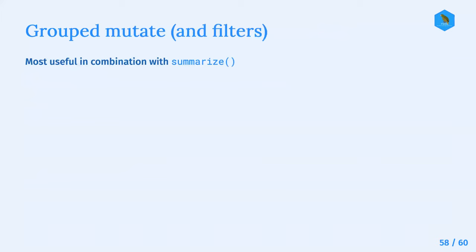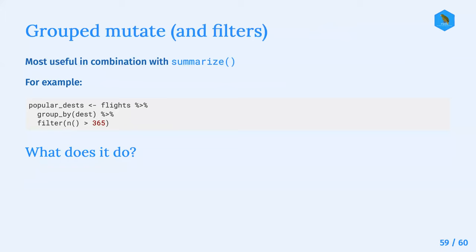With group mutate and filters, they're most useful in combination with summarize. For example, 'popular_dests' is assigned to flights piped into group_by(destination), piped into filtering. There's a filter argument there - the question is: what does this do? What are we trying to find out by running this example?